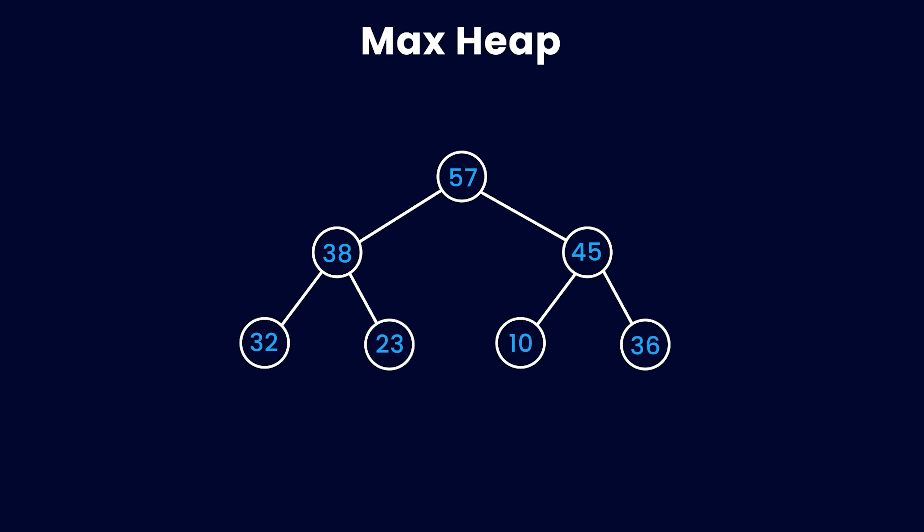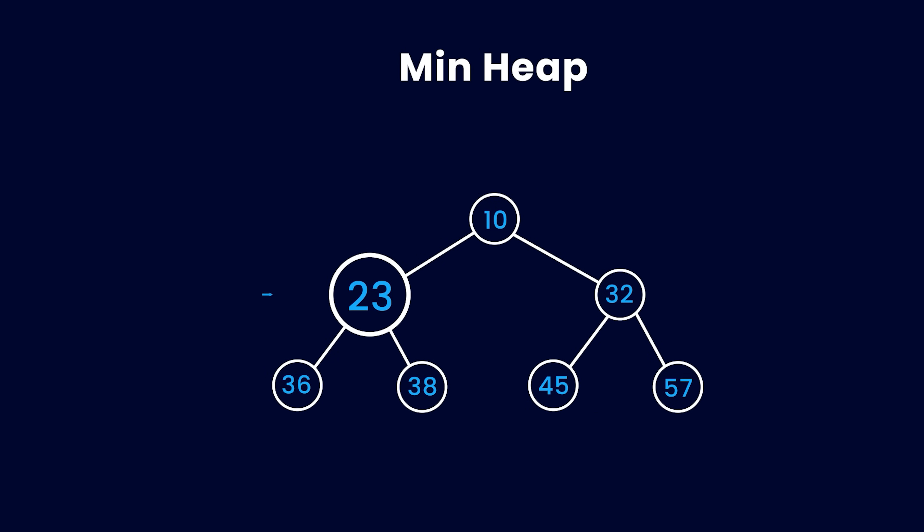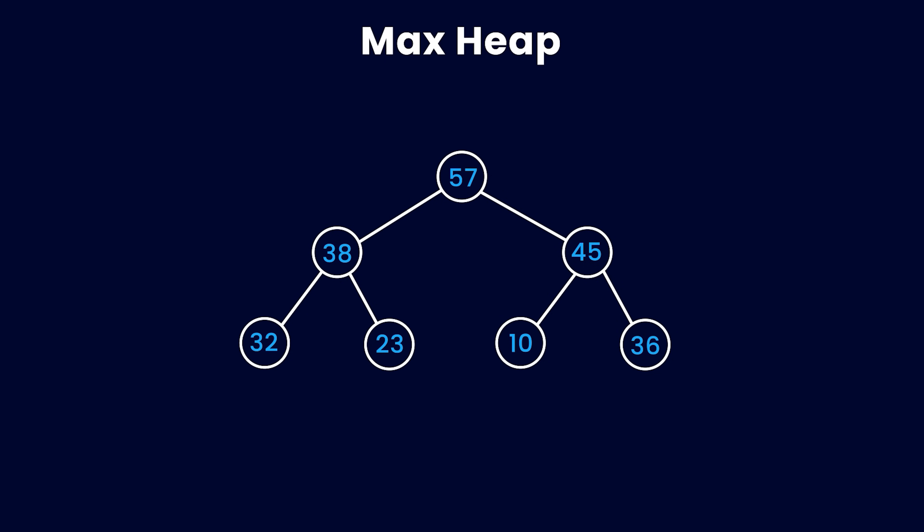Similar to max heap, we also have a min heap where every element is smaller than or equal to both of its children and the root node is the minimum of all the elements. Now, the heap I showed you might look like a tree, but it's actually implemented using an array. So heap in this example can also be written like this array, which is partially sorted.